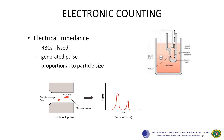Moving on to the electronic counting of WBCs, the most common technology used in a clinical hematology laboratory is electrical impedance. With the help of a sheath fluid, particles pass through an aperture one at a time, and each time a particle passes, a pulse is generated. The pulse height is directly proportional to the particle size, allowing discrimination of WBCs, RBCs, and platelets. Certain platforms require pre-lysis of RBCs before running so that the WBC count can be generated.